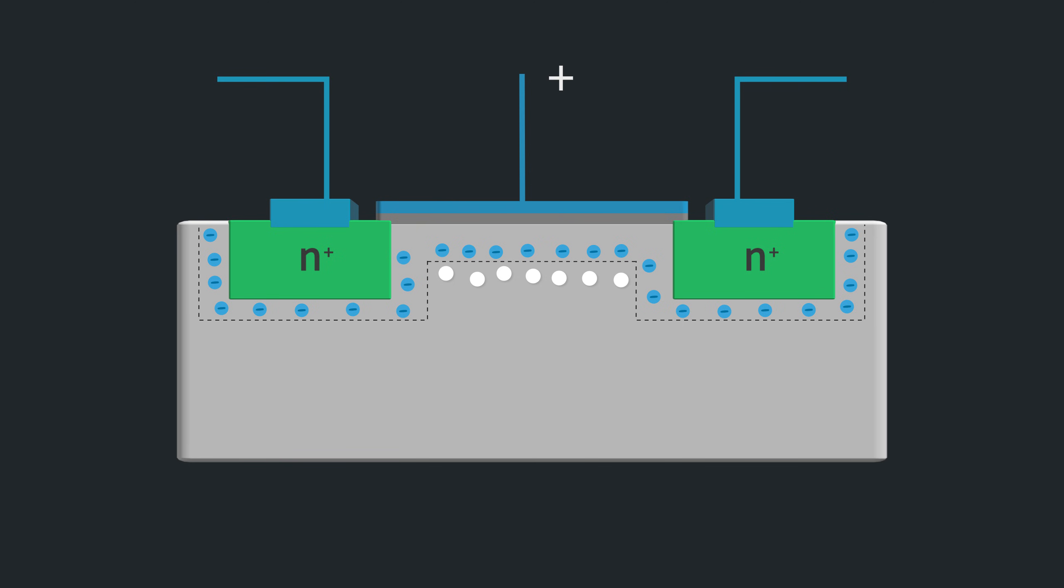Besides this depletion region, an inversion layer of electrons starts to form at the source, and as the voltage increases, that inversion layer expands toward the drain. However, at this point, when the gate voltage is not yet equal to the threshold voltage, free carriers do not yet connect all the way from the source to the drain. This area of operation is called the saturation or pinch-off region.